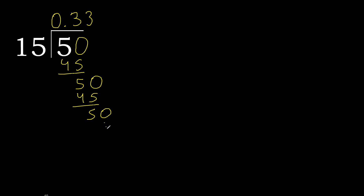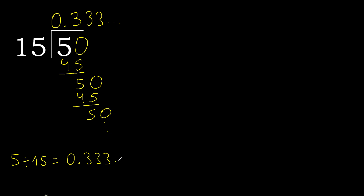The pattern repeats — therefore repeat. Here the digit is 3, repeat. So 5 divided by 15 gives 0.3 repeating — the digit 3 repeats after the point.